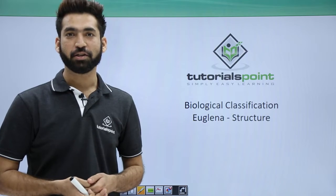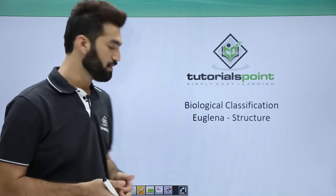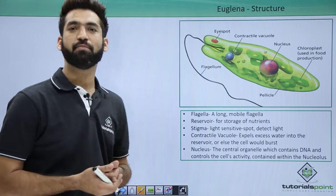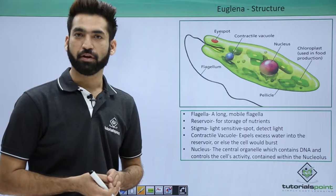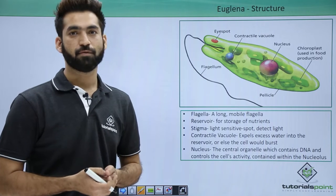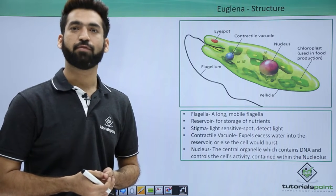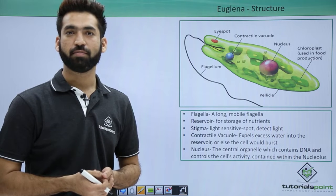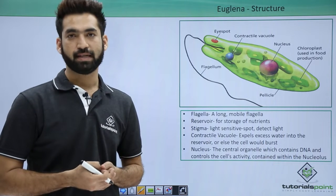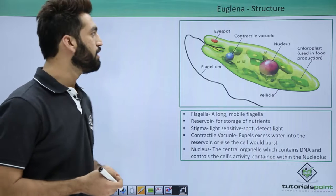In this session we'll be detailing you about Euglena structure. Euglena is one of the very important members of the Euglenoid group. It is a photosynthetic protist, and apart from being photosynthetic, they also behave like saprophytes, so they have the mixotrophic mode of nutrition.